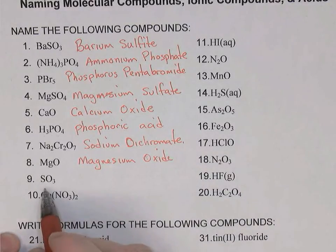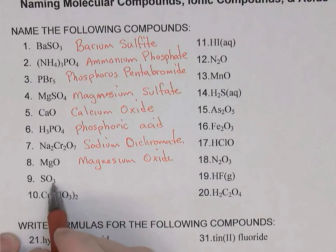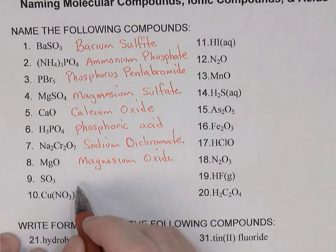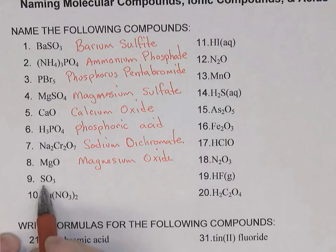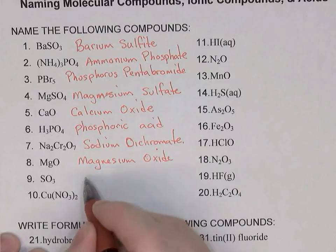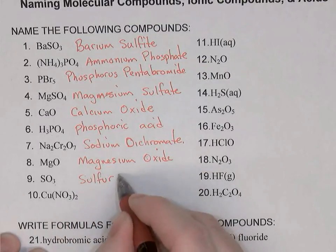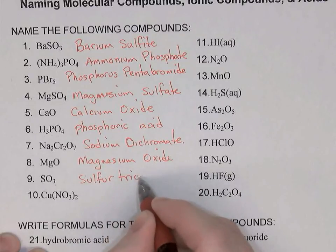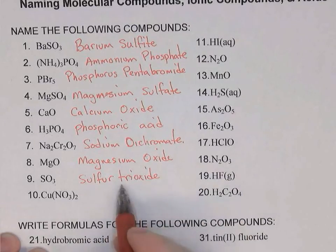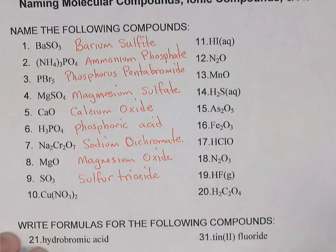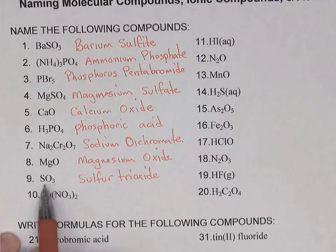This next example is not ionic. It starts with a non-metal bonded to a non-metal, so this is covalent or molecular. We need to use those prefixes again. When there's only one atom of the first element we don't use the prefix mono, so we'll just say sulfur. Three oxygens: tri-oxide. The prefixes like tri, di, and tetra are used only in covalent molecular compounds.